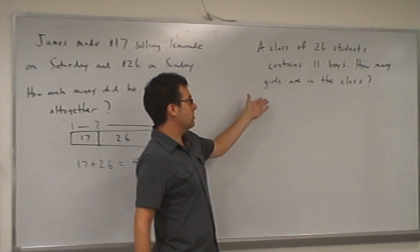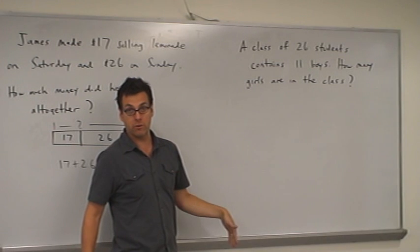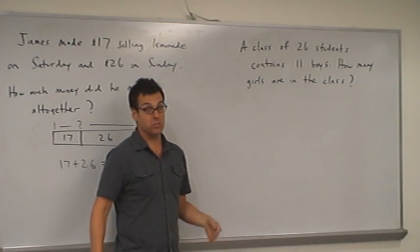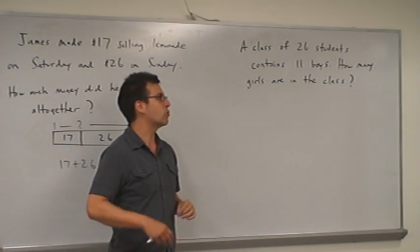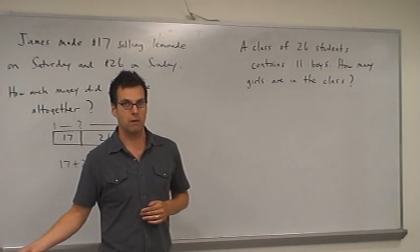Again, our hope is that our students are going to be able to read this problem. A class of 26 students contains 11 boys, how many girls are in the class? Our hope is that students will be able to read the problem and directly interpret the fact that 26 minus 11 is the necessary arithmetic to solve this problem.